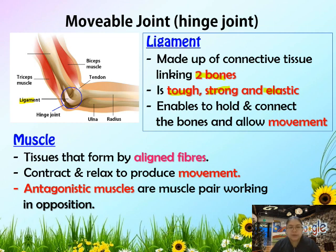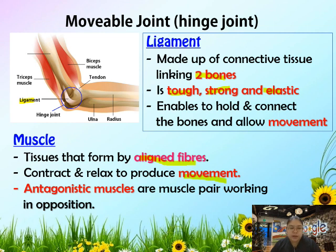Now let's see the muscle. Muscle — separated into tricep and bicep — is tissue formed by aligned fibers. It contracts and also relaxes, and finally produces movement. Antagonistic muscle means a muscle pair. They work in opposite directions — the bicep and tricep working in opposite directions when you are straightening or bending your arm.